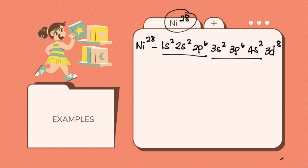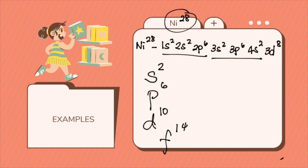Just to wrap up everything: S can only fill to 2 electrons, P can fill to 6 electrons, D can fill to 10 electrons, and F can fill to 14 electrons.